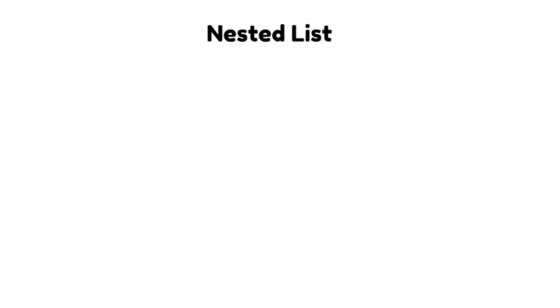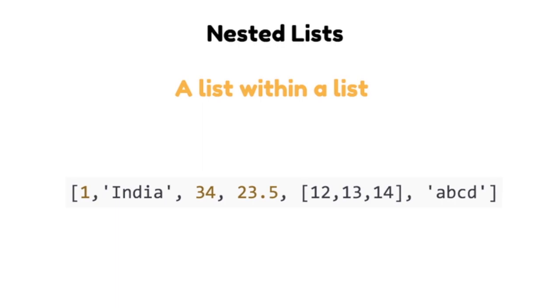We can also have nested lists. In that case, a list can have another list as an item of its own.